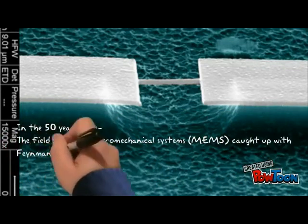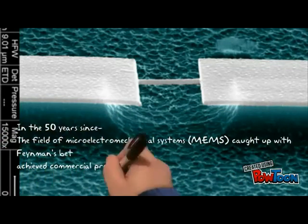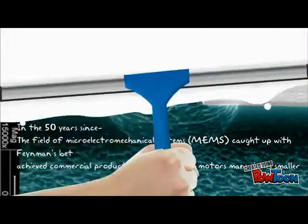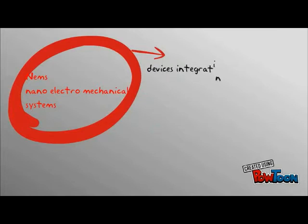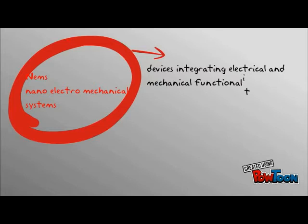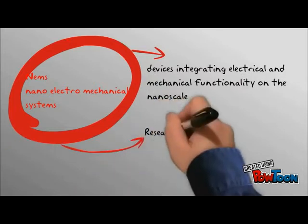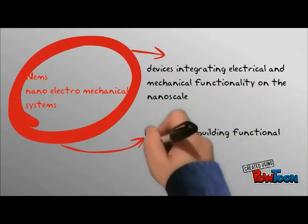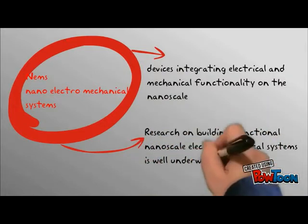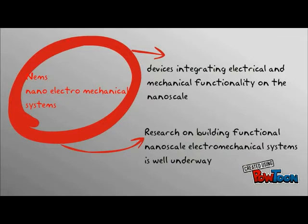After that, the field of micro electromechanical systems caught up with Feynman's vision and achieved commercial production capabilities of motors many times smaller. But first things first, the nano electromechanical systems field is all about how to integrate electrical and mechanical devices on the nano scale.